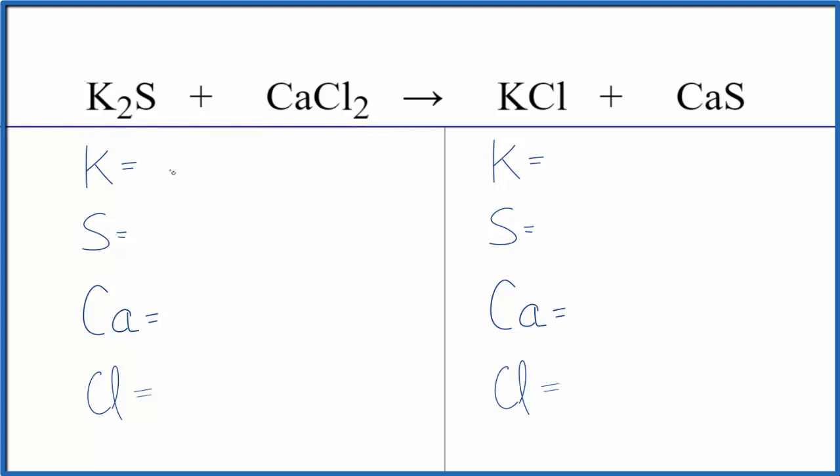We have two potassium, one sulfur, one calcium, and two chlorine atoms. On the product side, we have one potassium, one sulfur, one calcium, and one chloride. So it looks like if we could get two potassiums here and two chlorine atoms here, we'd be done.